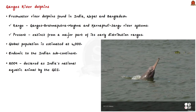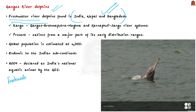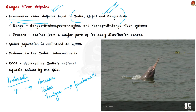The Gangetic River Dolphin, also called the Ganges River Dolphin, is a freshwater river dolphin found in India, Nepal, and Bangladesh. There are only four freshwater dolphin species in the world: the Gangetic river dolphin, the Amazon river dolphin in South America, the Yangtze river dolphin in China, and the Indus river dolphin. However, the Yangtze river dolphin has been declared functionally extinct, so currently existing freshwater dolphins are the Amazon, Indus, and Gangetic river dolphins.